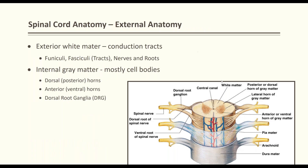For spinal cord anatomy: the gray matter in the brain is on the outside, but in the spinal cord it is inside. The white matter in the brain is inside, but in the spinal cord it is outside. The exterior white matter of the spinal cord forms the funiculi or fasciculi — including fasciculus gracilis and cuneatus for upper and lower extremity. The internal gray matter, darker due to cell bodies, forms the dorsal horns, anterior horns, and dorsal root ganglia.